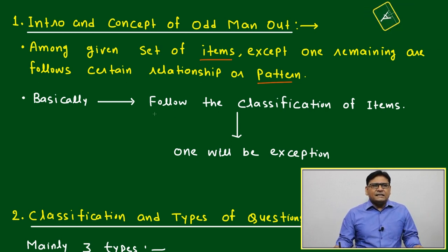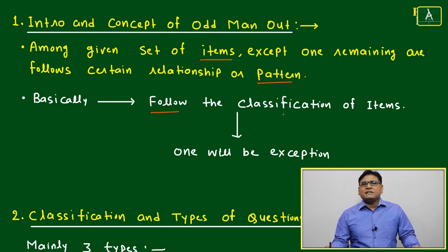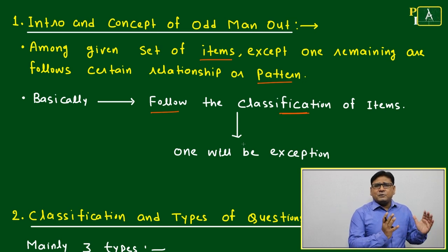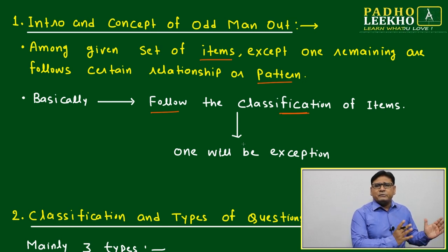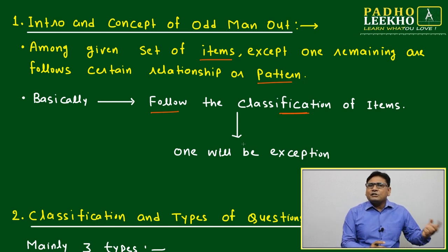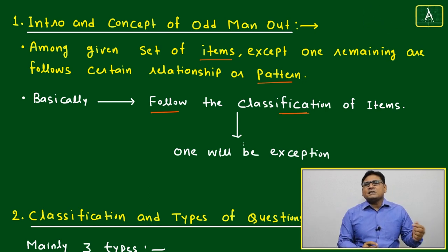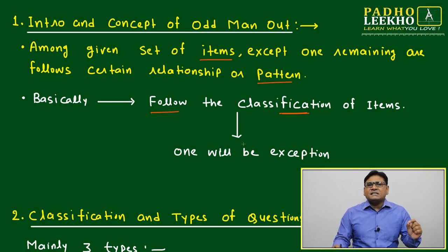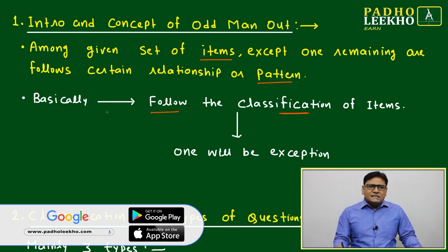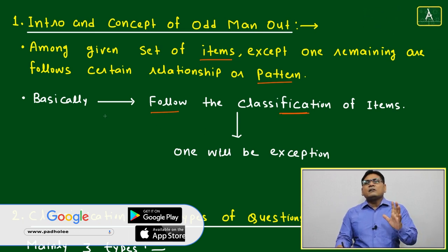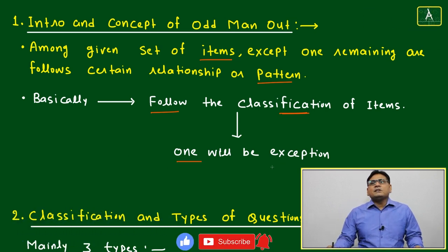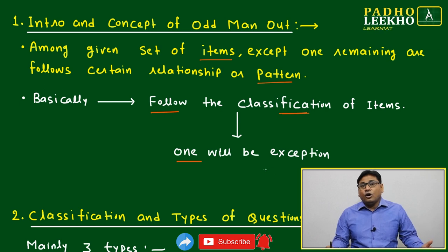Basically it will follow the classification of items - like we are classifying items, maybe alphabets, maybe words, maybe things, maybe goods, maybe anything based on certain commonality. What can be the commonality depends on the situation and requirement, but classification generally will be based on certain commonality. This mainly follows the classification of items, and one will be the exception among them. Which one is that exception will be called the odd man out.